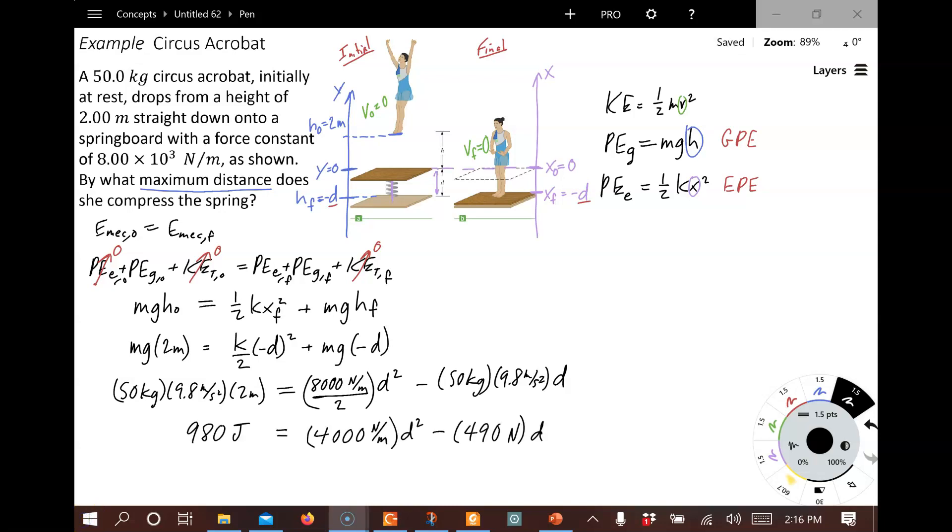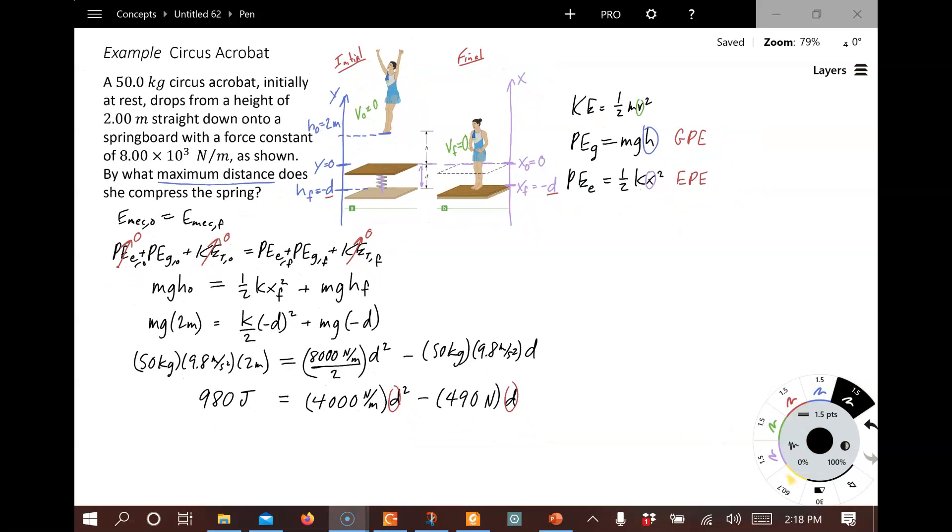So this is what it looks like when we calculate all the numerical values. And notice what kind of equation do we have here? It's a quadratic equation. And the variable is D. So we're going to have to solve this as a quadratic equation. You're going to want to write this out in its standard form. So to do that, we've got to get this set equal to 0. So let's subtract 980 from both sides.